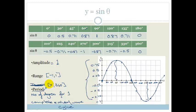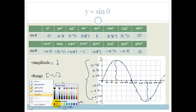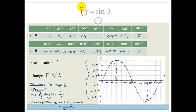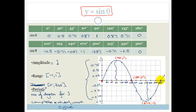You don't have to plot every single point — there are significant points. For the basic sine curve y = sin θ, you are always going to pass through: (0, 0), (90, 1), (180, 0), (270, -1), and (360, 0). If you know the shape of a sine curve and can plot those key points, you're fine. You don't actually have to go through all the other points.